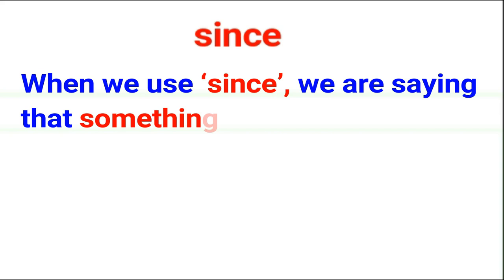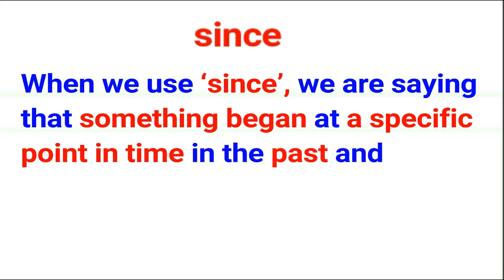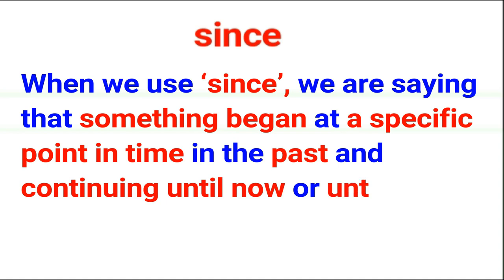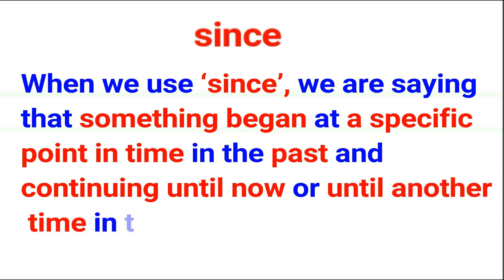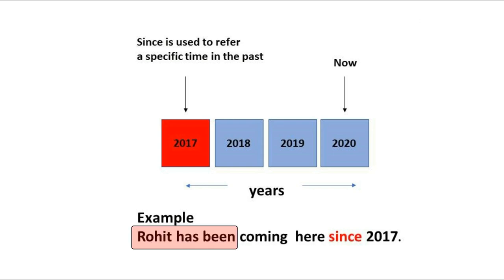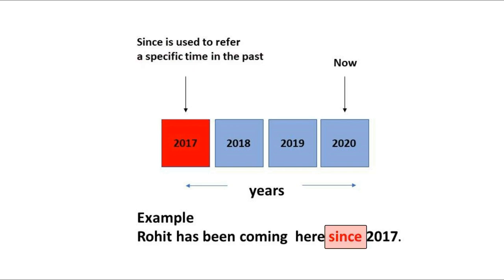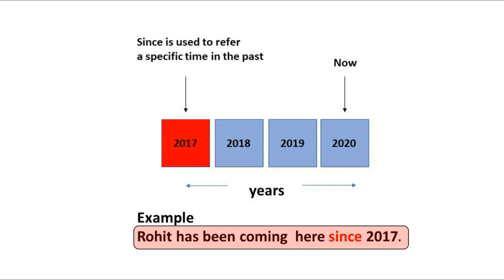Something began at a specific point in time in the past, continuing until now or until another time in the past. Let us understand with the help of this figure. The sentence says: 'Rohit has been coming here since 2017.' So 2017 is a specific point of time in the past. We use 'since' to refer to a specific point of time, which is 2017 in the sentence.